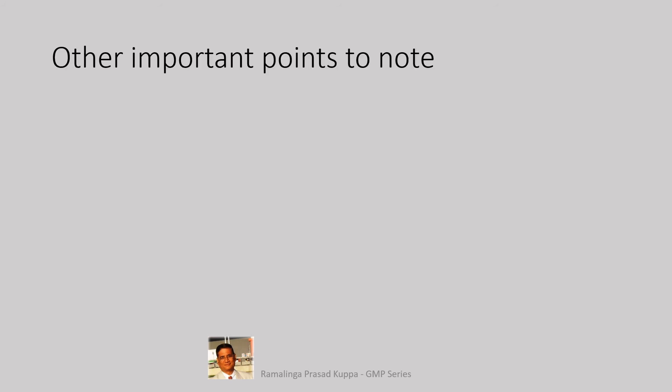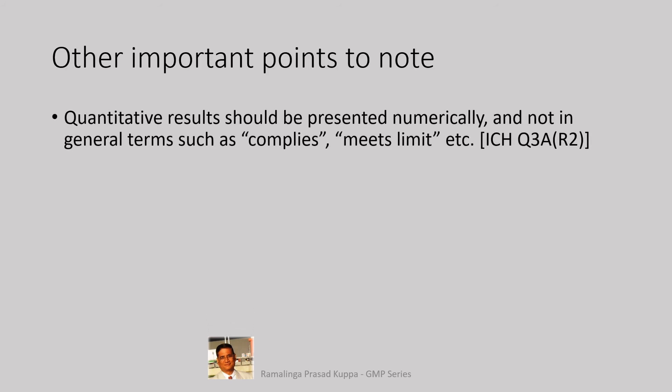Let us see other important points to note. Quantitative results should be presented numerically and not in general terms such as complies, meets limit, etc. This is as per the prescription in ICH Q3A R2 guideline. Complies or meets limit or confirms are the terminology used for qualitative reporting. This is used when there is a comparison of sample result with the standard result for pass or fail decision. When there are numerical values, they should be considered for calculations.